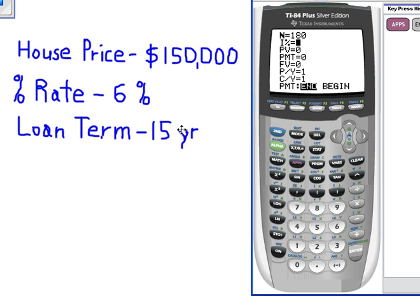We're going to get a 6% interest rate, so we put in 6% right here. And the present value is going to be this value of the house, $150,000.